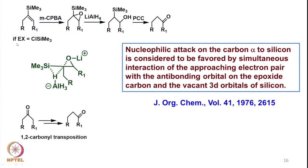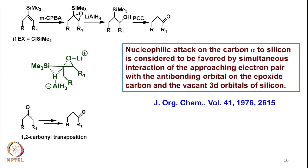Suppose if we take the vinyl silane made by the Shapiro reaction method, and if the substituent is SiMe3, then we can carry out epoxidation using meta-chloroperoxybenzoic acid. It is very interesting to see that such epoxides, which are derived from vinyl silanes, when they are reacted with different nucleophiles — say for example lithium aluminum hydride —